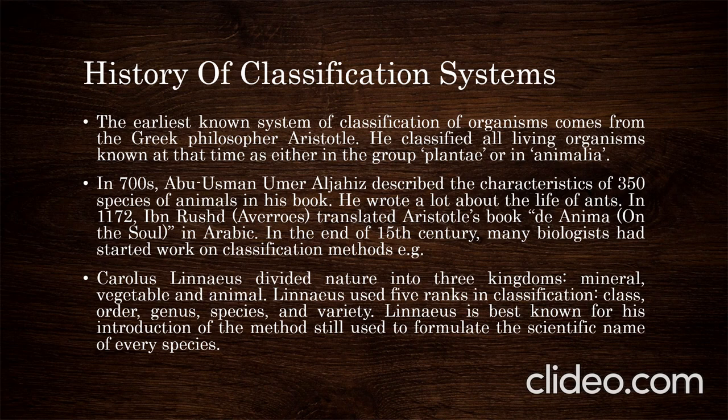By the end of the 15th century, many biologists had started work on classification methods. Carolus divided nature into three kingdoms: mineral, vegetable, and animal. He used five ranks in classification: class, order, genus, species, and variety. He is best known for introducing the method still used to formulate the scientific name of every species — binomial nomenclature.